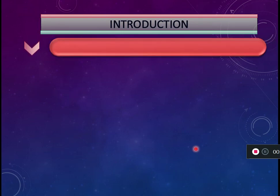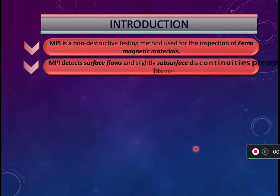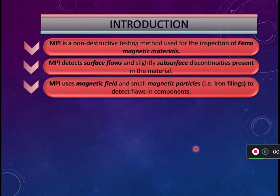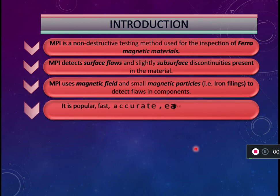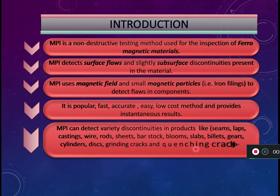Magnetic particle testing is one of the non-destructive methods used for testing ferromagnetic materials. Using this method, we can get information about surface and subsurface discontinuities. It uses magnetic fields and magnetic particles — essentially iron filings — for detection of discontinuities in components. It is fast, accurate, popular, easy, low cost, and provides instant results.